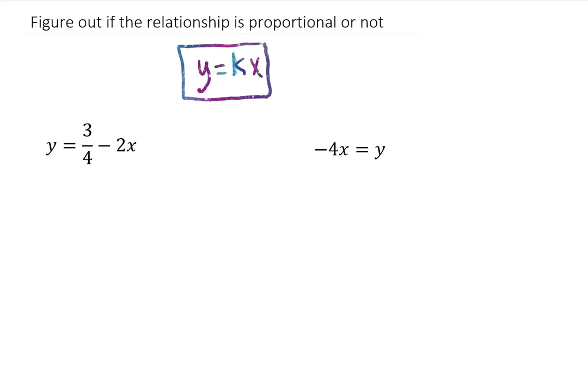If you know some things about linear graphs, this has to be a linear graph, y equals mx, but in this case kx, with a zero y-intercept. In other words, it goes through the origin.